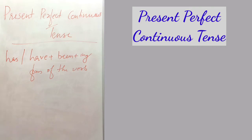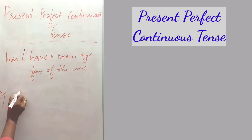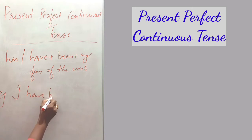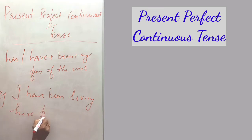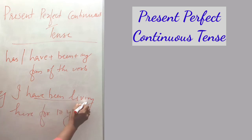Now we can discuss when to use the present perfect continuous tense. First, it is used for activities that started in the past but have continued into the present. Example: I have been living here for 10 years.